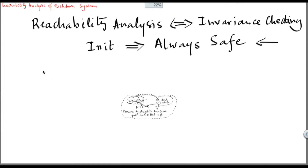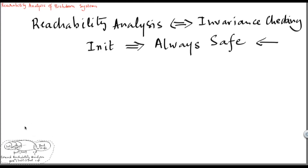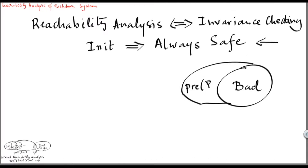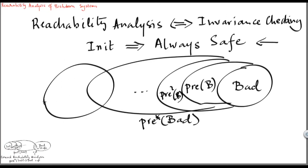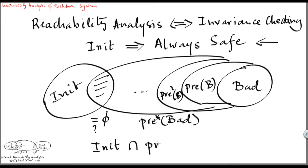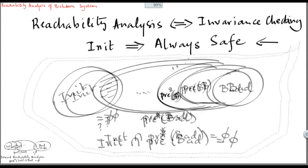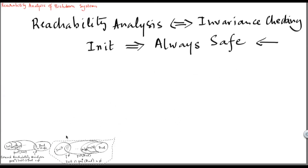Alternatively, we may consider solving this problem using a backward approach. Starting from the bad states, we can compute the predecessors of those states in one step, two steps, and so on, until getting the set of all predecessors of the bad states. The question we need to solve is whether this set intersects the set of initial states. We have to solve an emptiness problem, which is now phrased as the emptiness of the intersection of the initial states with the set of all predecessors of the bad states. Therefore, our original problem can be solved either by a forward or backward reachability approach.